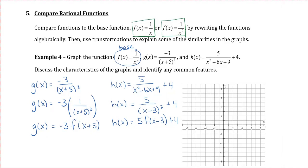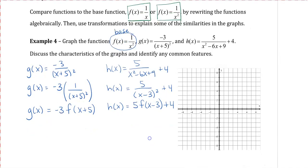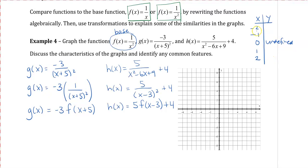Let's draw this quickly. For the 1/x² graph, doing a table of values: at x = 0, it's undefined. At x = −2, we get 1/4. At x = −1, we get 1. At x = 1, we get 1. At x = 2, we get 1/4. Notice that these numbers are symmetrical on both sides.